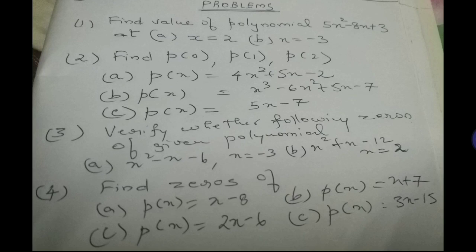Find p(0), p(1), and p(2) for p(x) = 4x² + 5x − 2. Substitute x = 0: you get −2. x = 1: 4 + 5 − 2 = 7. x = 2: 4(4) + 5(2) − 2 = 16 + 10 − 2 = 24. Similarly, do the same for p(x) = x³ − 6x² + 5x − 7 and p(x) = 5x − 7. Pause and note down the problems.